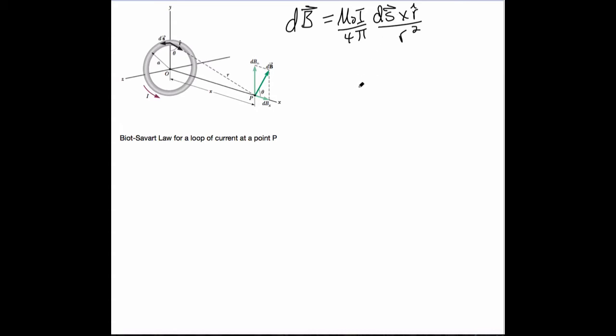In fact, we're going to do like we did with the long current carrying wire and just think about the magnitude of the B field since we know the direction is along the X axis. So that makes this a simpler sort of step to do.